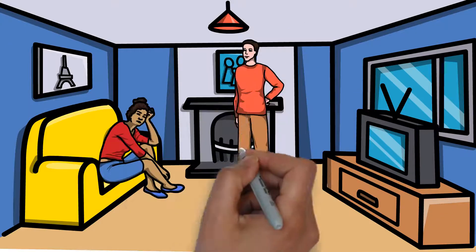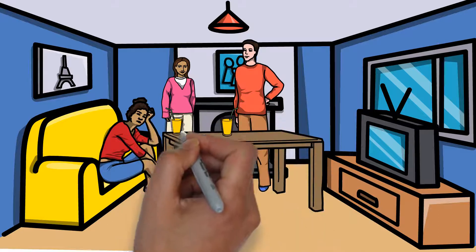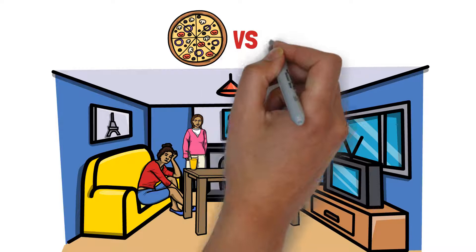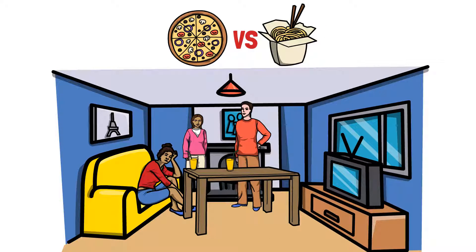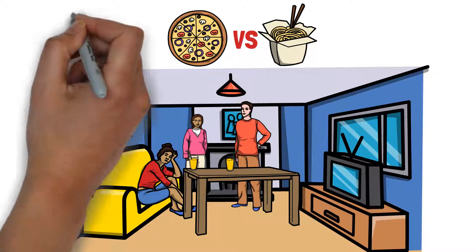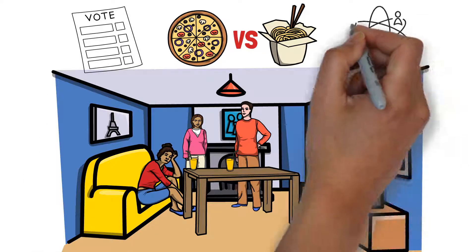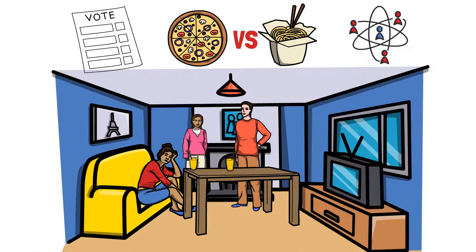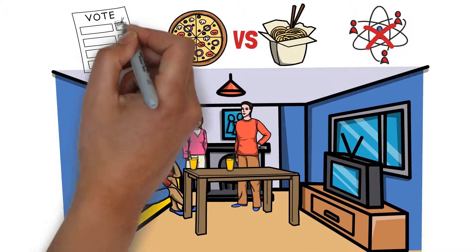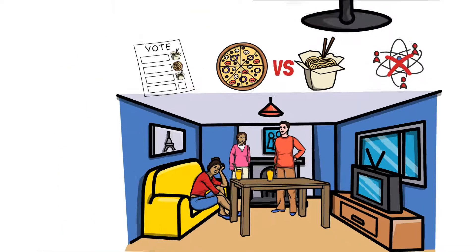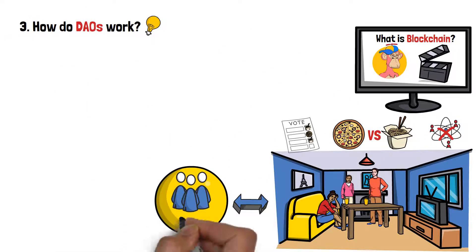Now, think about the last time you and your friends got together at someone's place for a casual hangout. At some point in time, someone asked the big question: should you order pizza or Chinese food? Well, there is only one way to settle this question in a civil fashion — you and your friends decided to vote. In this situation, there was no central entity who would come and make the decision for the entire group. Instead, each member of the friends group votes, and gets to be a part of the decision-making process. This is essentially how a DAO functions.